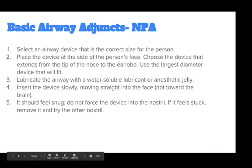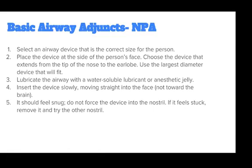To insert an MPA, select an airway device that is the correct size for the person. Place the device at the side of the person's face and choose the device that extends from the tip of the nose to the earlobe. Use the largest diameter device that will fit. Lubricate the device with a water-soluble lubricant or anesthetic jelly. Insert the device slowly, moving straight into the face, not toward the brain. It should feel snug. Do not force the device into the nostril. If it feels stuck, remove it and try the other nostril.